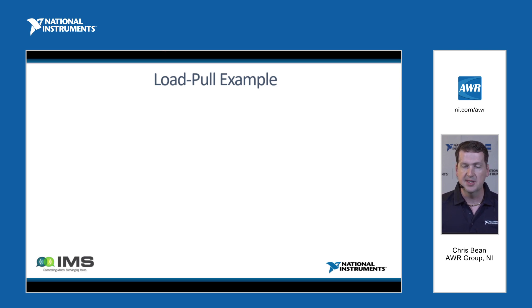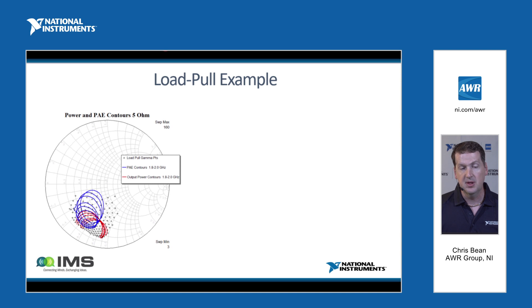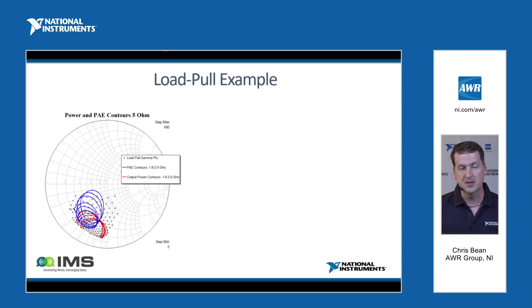Diving into a load-pull example: our tool interfaces directly with load-pull data. The idea is we've got a device that the designer has characterized with load-pull over a locus of impedances shown on the Smith chart. We've got PAE and output power contours over a frequency range of 1.8 to 2 GHz. The blue traces are 63% efficiency contours at five or six different fundamental frequencies, and the red traces are output power contours — each at the 1 dB compression point, characterizing what the device is capable of.